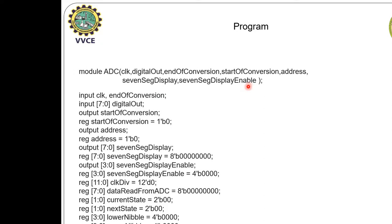Input clock and another input is end of conversion. Input digital out is 8-bit. Output start of conversion is initialized with 0. Output address is also initialized as 0. The 7-segment display is initialized as 00 and display enable is also 000. For clock division, we have taken a 12-bit clock. Data read from the ADC is also initialized to 00.